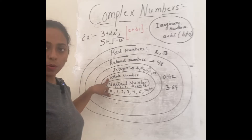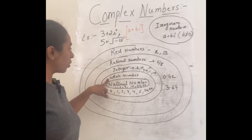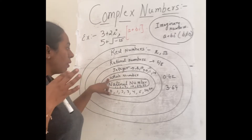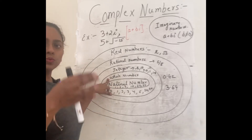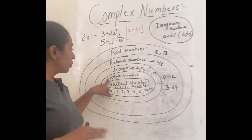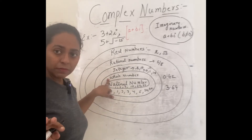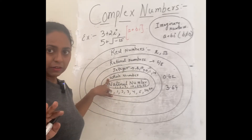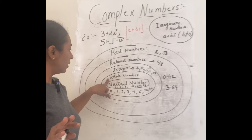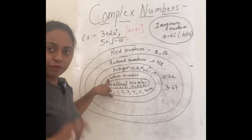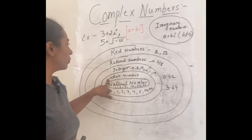Then whole numbers — whole numbers include 0, 1, 2, 3, 4 and so on, but exclude all negative numbers. No negative numbers and no fractions are included in whole numbers.